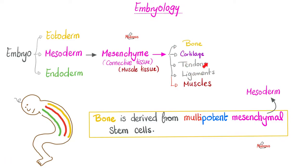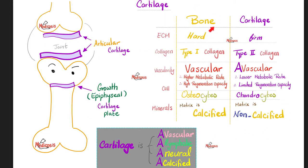Bones, cartilages, tendons, ligaments, muscles, etc. come from the mesoderm. Bones are hard because they are made of type 1 collagen. Cartilages are firm because they are made of type 2 collagen, also because the mineralization is different.